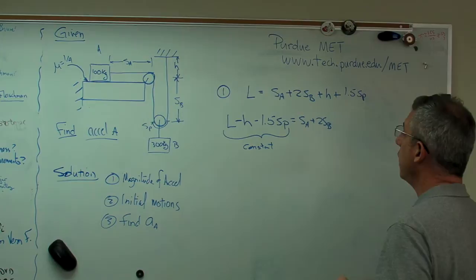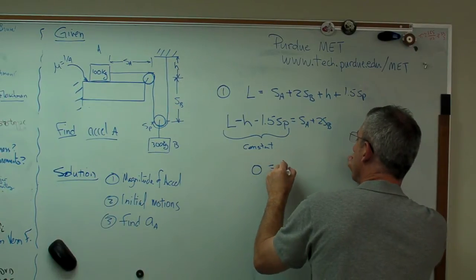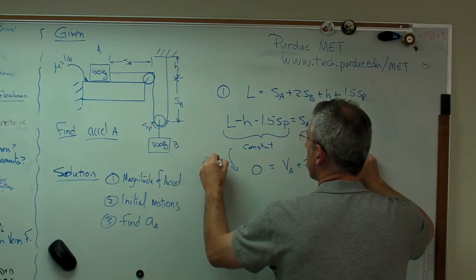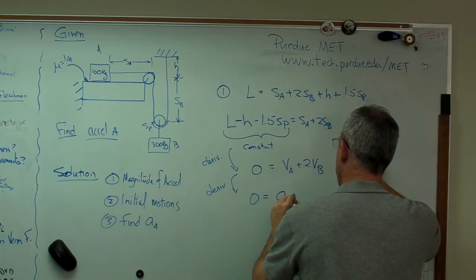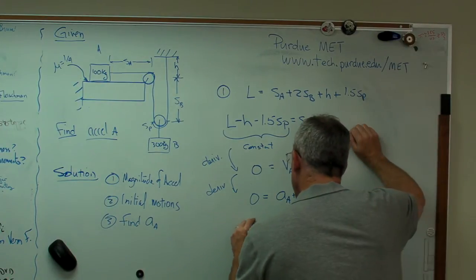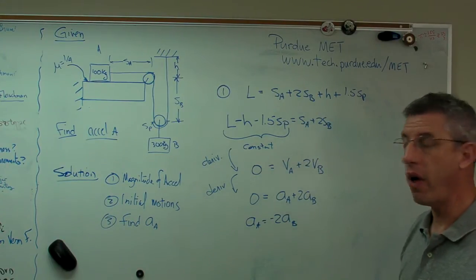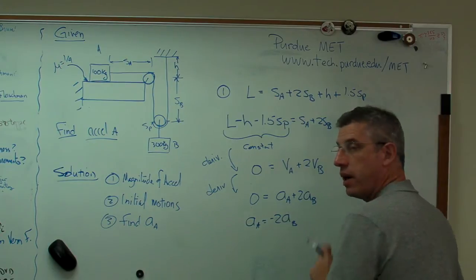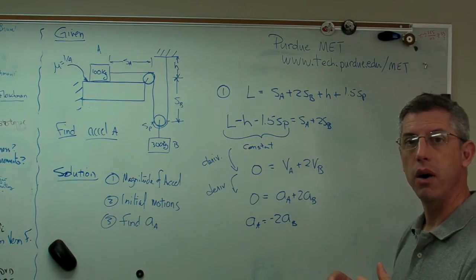If I take a derivative of this expression here, I'm going to get zero equals the time derivative of distance A, which is velocity at A, plus 2VB. If I take another derivative, I get zero equals AA plus 2AB. If I carry the algebra out, I'm going to see that AA equals minus 2AB. For right now, all I need to know is the magnitudes. I'm going to notice that AA is twice AB. That minus sign actually isn't going to be there because of the way we're going to choose our coordinate system.